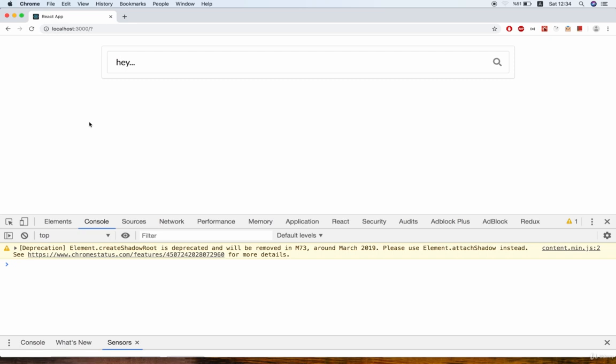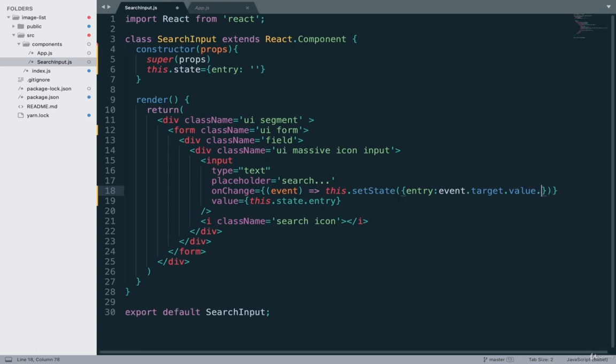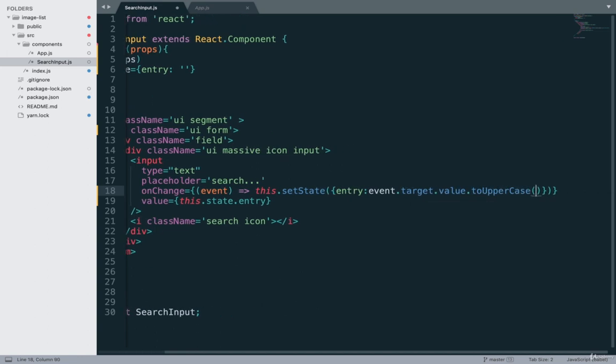Now, the other thing that we can very easily do is manipulate whatever the user is typing in. For example, let's say that we want to force this text input to always have capitalized values inside of it, no matter what the user types. So to do that, we would find right here where we get the callback for the onChange. And we would say toUpperCase. And we're going to take that value and we're going to force it to be uppercase. So I'll save this.